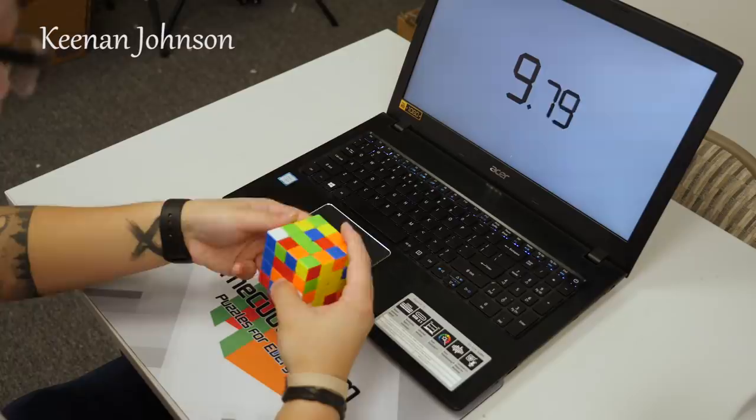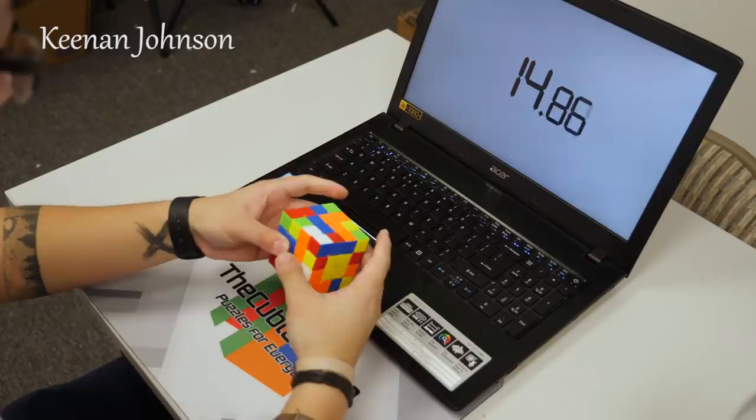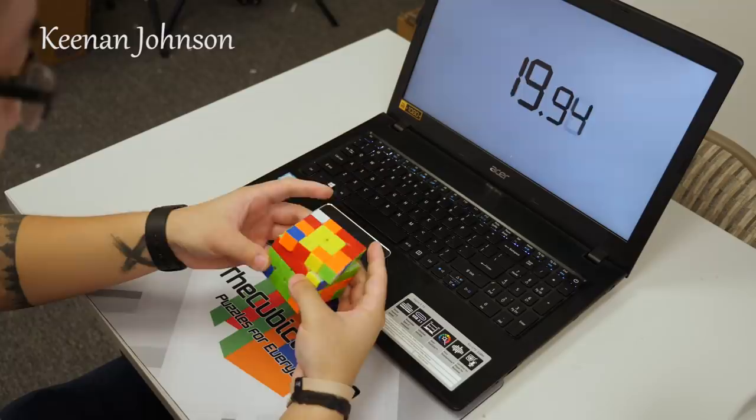I'd say the Valk 4 is a mix between the Wu Chui M, with its controllable cubic feel, and the Aosu GTS 2M, with its speed and bubbly crunchy turning. It's a little reminiscent of a Valk Power, but in a good way.